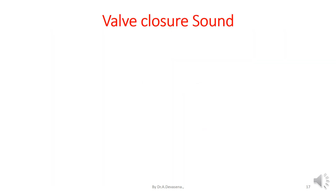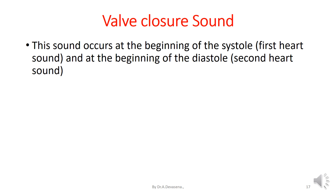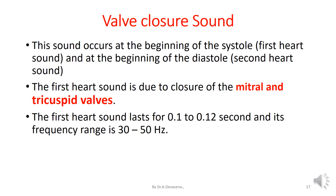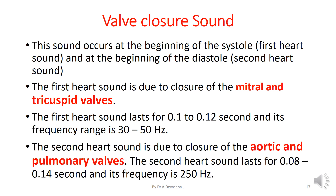The valve closure sound occurs at the beginning of the systole, that is the first heart sound, and at the beginning of the diastole, that is the second heart sound. The first heart sound is due to the closure of the mitral and tricuspid valves. It lasts for 0.1 to 0.12 seconds and its frequency range is 30 to 50 Hz. The second heart sound is due to closure of the aortic and pulmonary valves. It lasts for 0.08 to 0.14 seconds and its frequency is 250 Hz.